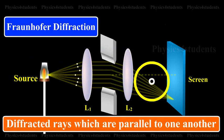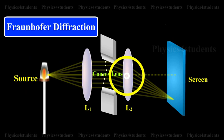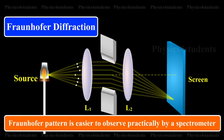The diffracted waves which are parallel to one another are brought to focus with the help of a convex lens. Fraunhofer pattern is easier to observe practically by a spectrometer.